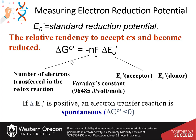The free energy of the system is defined as negative nF delta E naught prime, where n is the number of electrons transferred in the reaction, and F is Faraday's constant. The change in standard reduction potential is calculated by subtracting the donor energy from the acceptor. If this difference is positive, then the free energy of the system will be negative and the reaction will happen spontaneously — in this case, the protons will be pumped.